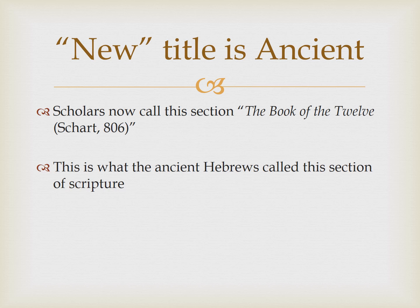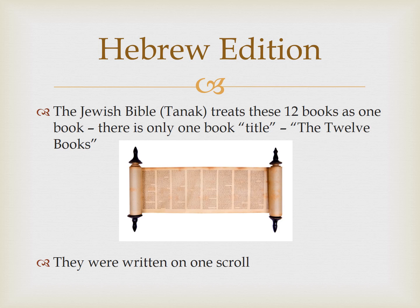There's a new title for this section of the Bible, and it's interesting because the new title really is the ancient title. Scholars now call this section the Book of the Twelve. This is what the ancient Hebrews called this section of Scripture, so it's a good place for us to turn to a more appropriate and elevated term for these great books, which have a lot of power and significance. The Jewish Bible, the Tanakh, treats these twelve books as one book — one scroll in most of the ancient Hebrew collections.